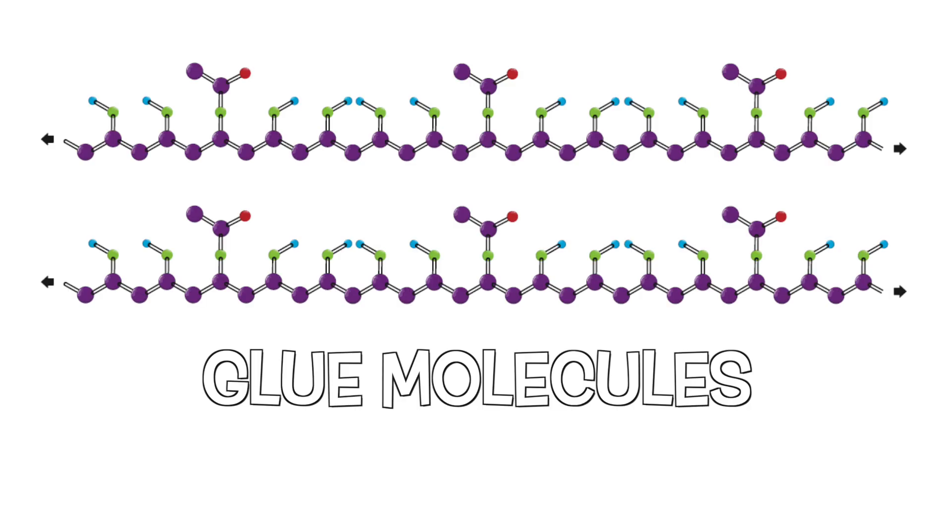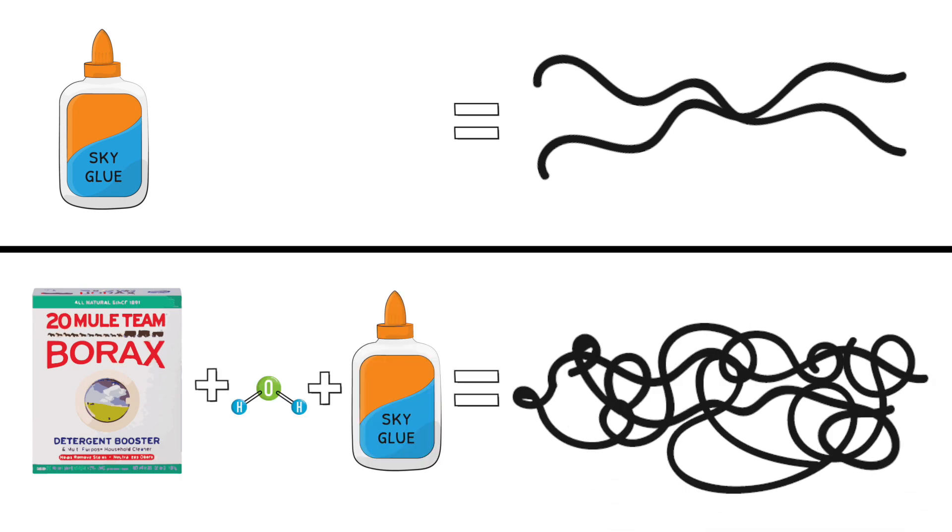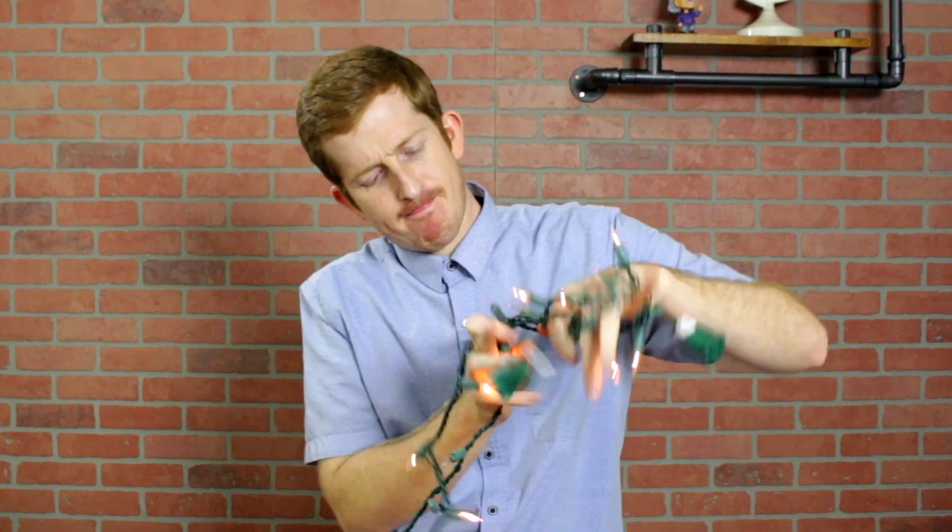When making slime, there are two common ingredients: glue and borax, or really boric acid. Glue already pours pretty slowly because it is made from a bunch of long molecules that get tangled together. But when borax, water, and glue are combined, the borax molecules or the boric acid molecules tie the long glue molecules together, like as if I were to, for some reason, tie different light strands together. This makes the tangling even worse and makes it even stiffer.